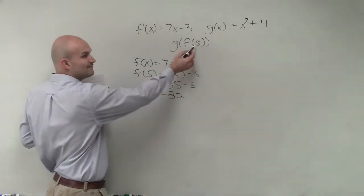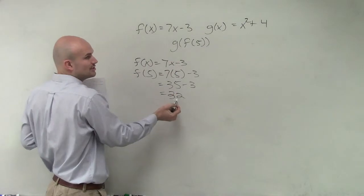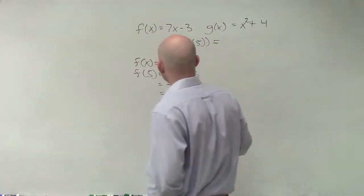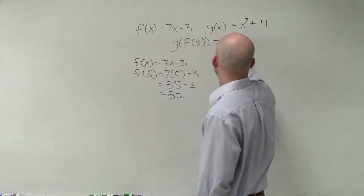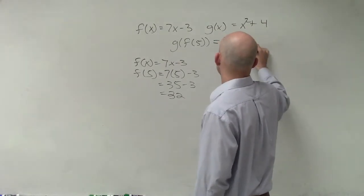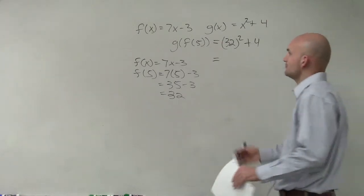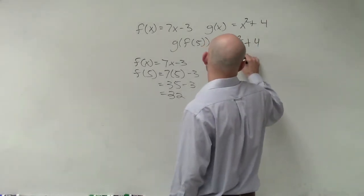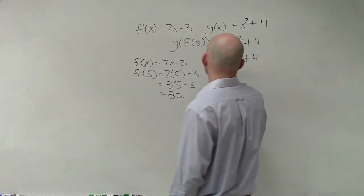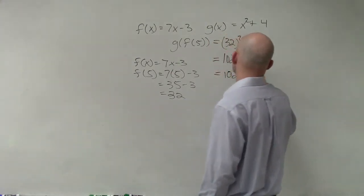So now we know what f of 5 equals. f of 5 equals 32. So therefore, g of f of 5 is now going to equal 32 squared plus 4. Well, 32 squared is going to be 1024 plus 4, which equals 1028.